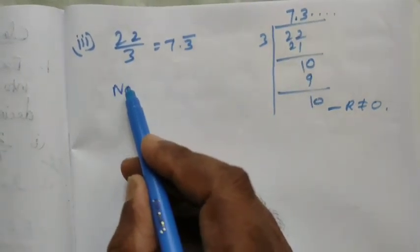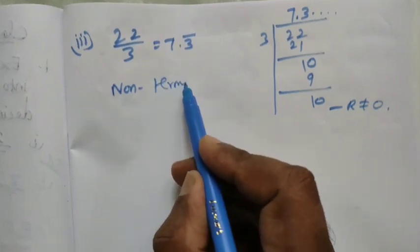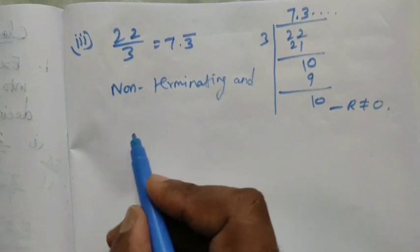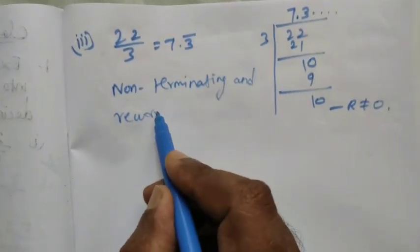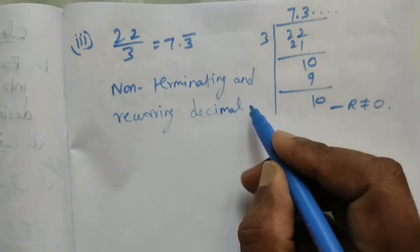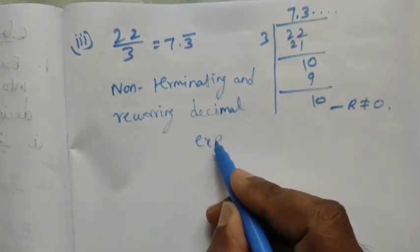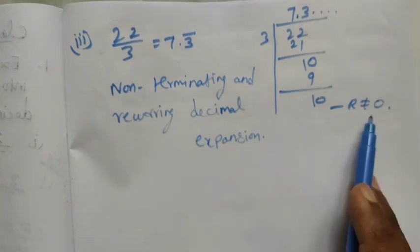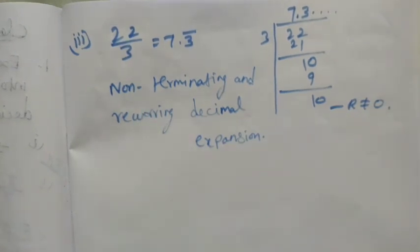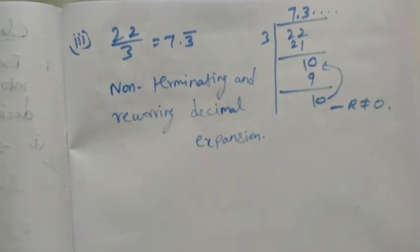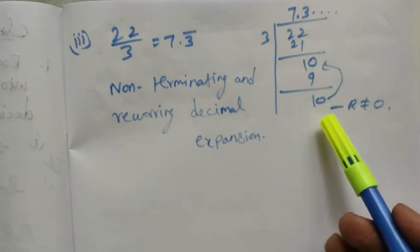This is non-terminating and recurring decimal expansion. So remainder not equal to 0 means non-terminating. The digit 3 is repeated: 10 divided by 3 is 3 remainder 1. That digit is repeated. This is non-terminating and recurring.